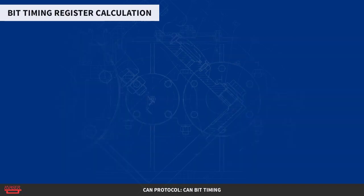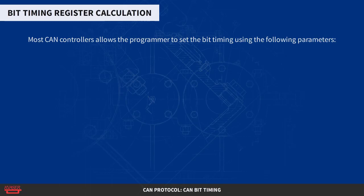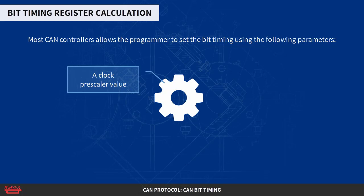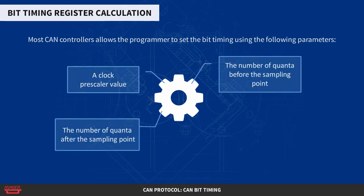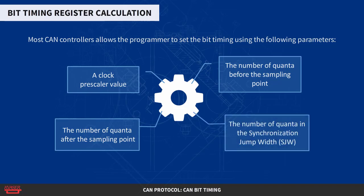Bit timing register calculation. Most CAN controllers allow the programmer to set the bit timing using the following parameters: a clock prescaler value, the number of quanta before the sampling point, the number of quanta after the sampling point, and the synchronization jump width, or SJW. Usually two registers are provided for this purpose — BTR0 and BTR1. Things tend to vary slightly between different controllers, so read your datasheets carefully.